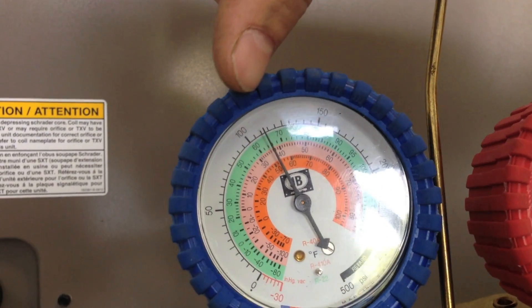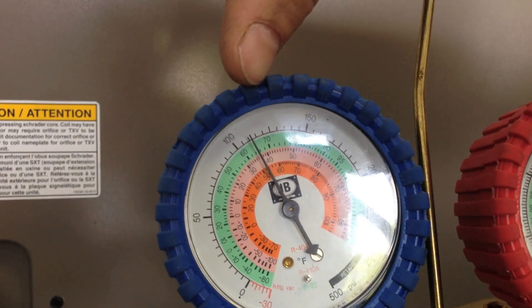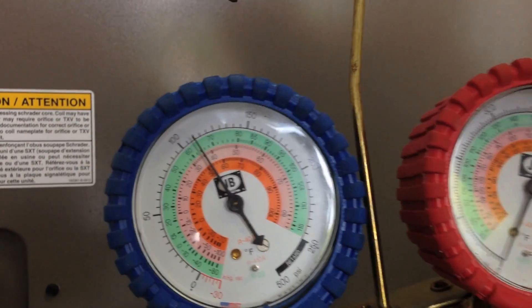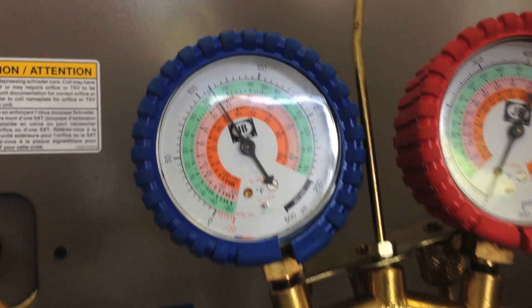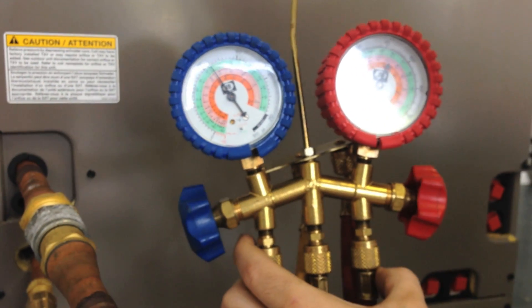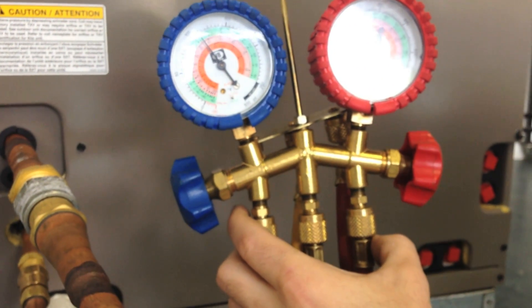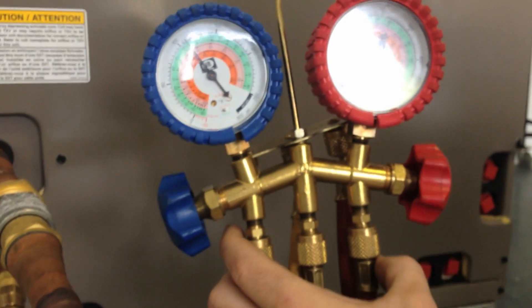The average system will be between 110 and 120 PSI for our 410A refrigerant. It is important to let your system run for 20 minutes before taking a true reading as it will fluctuate.